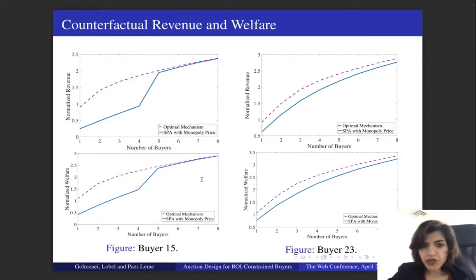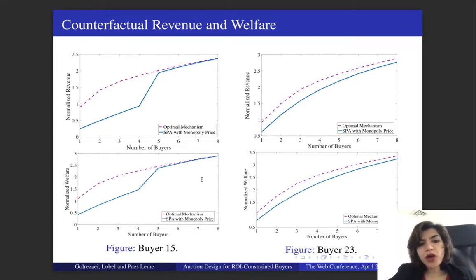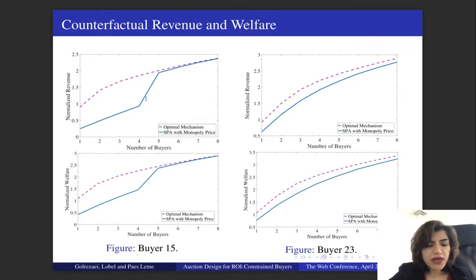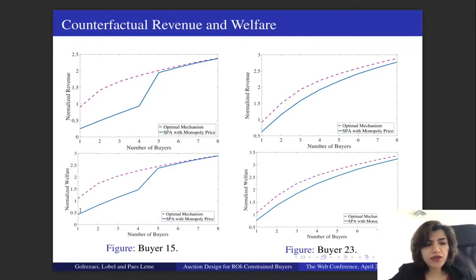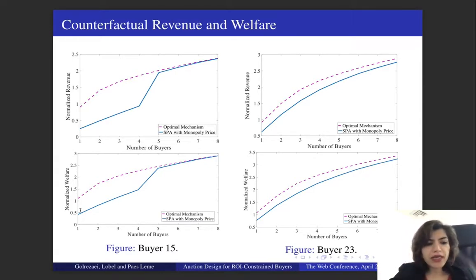Since we have characterized the optimal mechanism, we went back to the data and asked whether we would see significant improvement in revenue and welfare if we switch from the second price auction with the monopoly reserve price — optimal when there are no ROI constraints — to our optimal mechanism. Focusing on these figures, we observe that under our optimal mechanism, both revenue and welfare increase. In fact, the increase in revenue and welfare is higher when the market is thinner and the number of buyers is smaller. Usually in mechanism design, when you improve revenue, welfare suffers. But here we see a win-win situation: buyers get higher welfare and the ad exchange also earns more revenue.